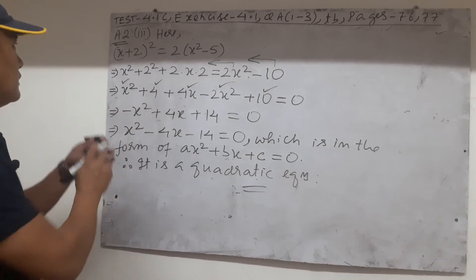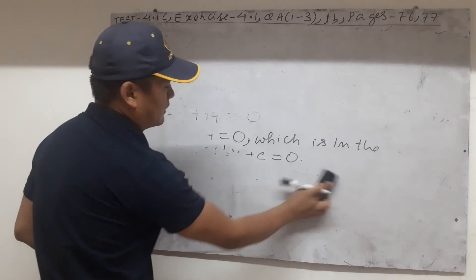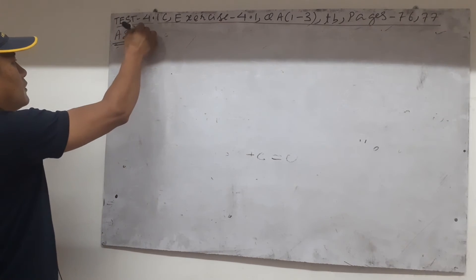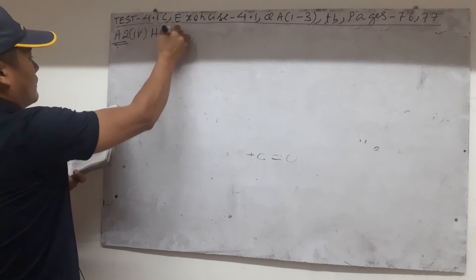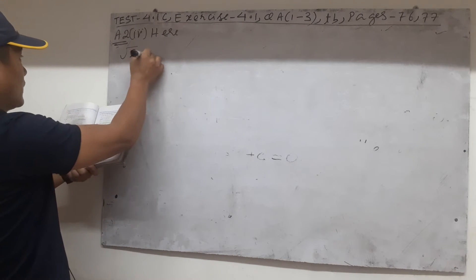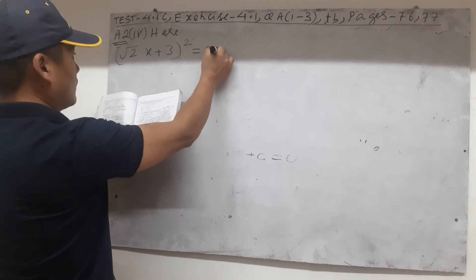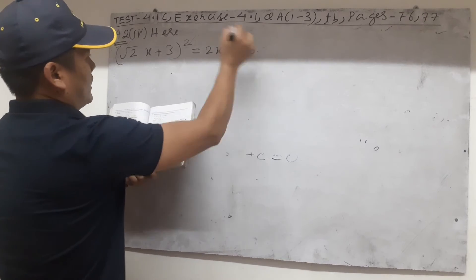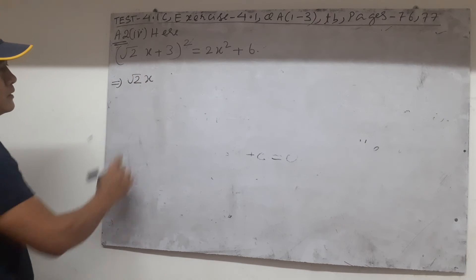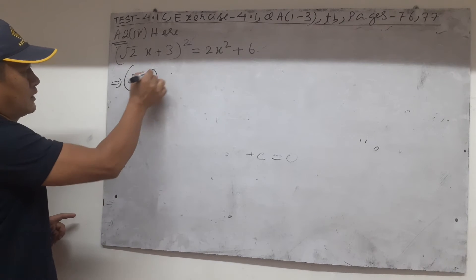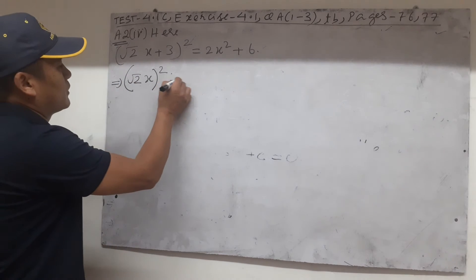We have not yet found our answer — the one which is not quadratic. So most probably the last option is the one. Let us do it carefully. Option 4 is: (√2·x plus 3) whole squared equals 2x squared plus 6. Using (a plus b) whole squared, where a is √2·x — since there are two factors, we should put brackets before squaring, otherwise it will go wrong.